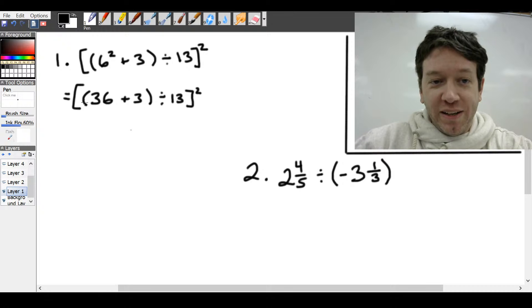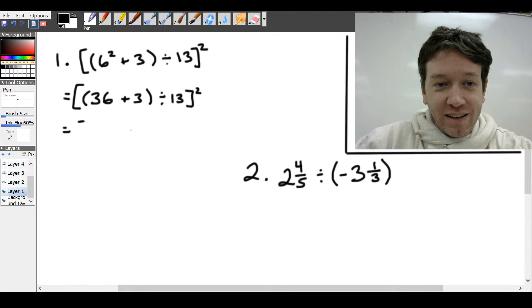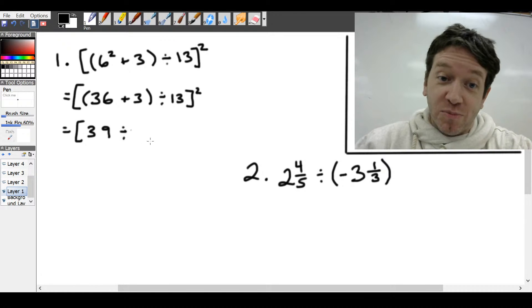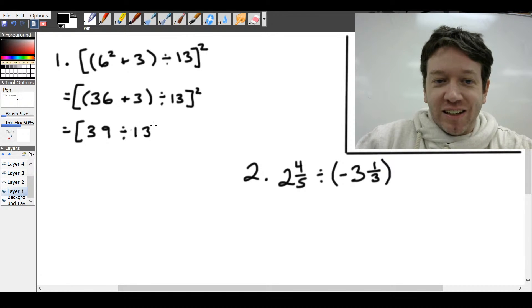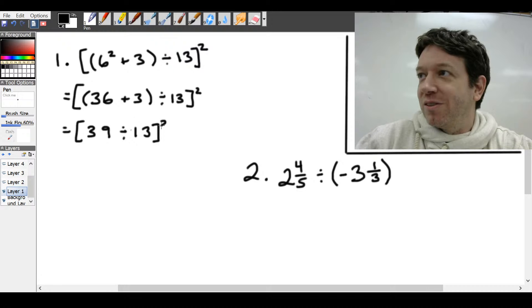Six squared is going to be 36 plus 3. And we won't do anything else yet. Next, we can deal with these brackets further. 36 plus 3 is 39. Once we have that, we can drop the brackets, at least those inner brackets anyways. And that will be all squared.